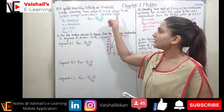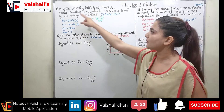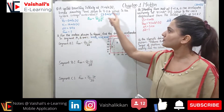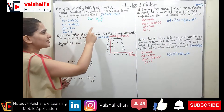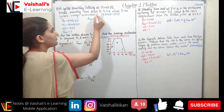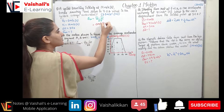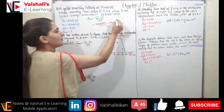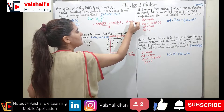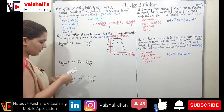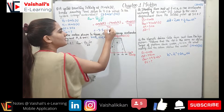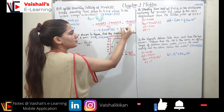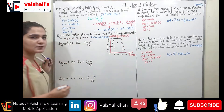Problem 9: A cyclist traveling at 14 m/s south brakes smoothly to rest in 4 seconds. a_average = (V_f − V_i) / ΔT = (0 − 14) / 4 = −14 / 4 = −3.5 m/s² south. Since minus south represents north, the average acceleration is 3.5 m/s² north — the negative sign indicates deceleration opposite to the direction of motion.